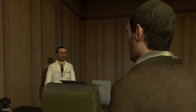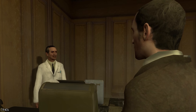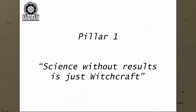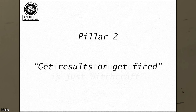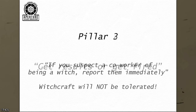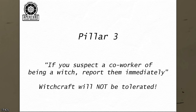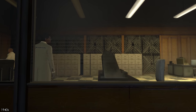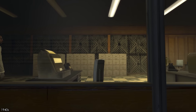As Cave's employees grew to know him, they learned just how quirky his character was. One specific example was when he listed the three pillars of Aperture Science: first, that science without results is just witchcraft; second, get results or get fired; and third, if an employee suspected a co-worker of being a witch, they should report them immediately. Cave had created a company from nothing, and it only continued to grow.